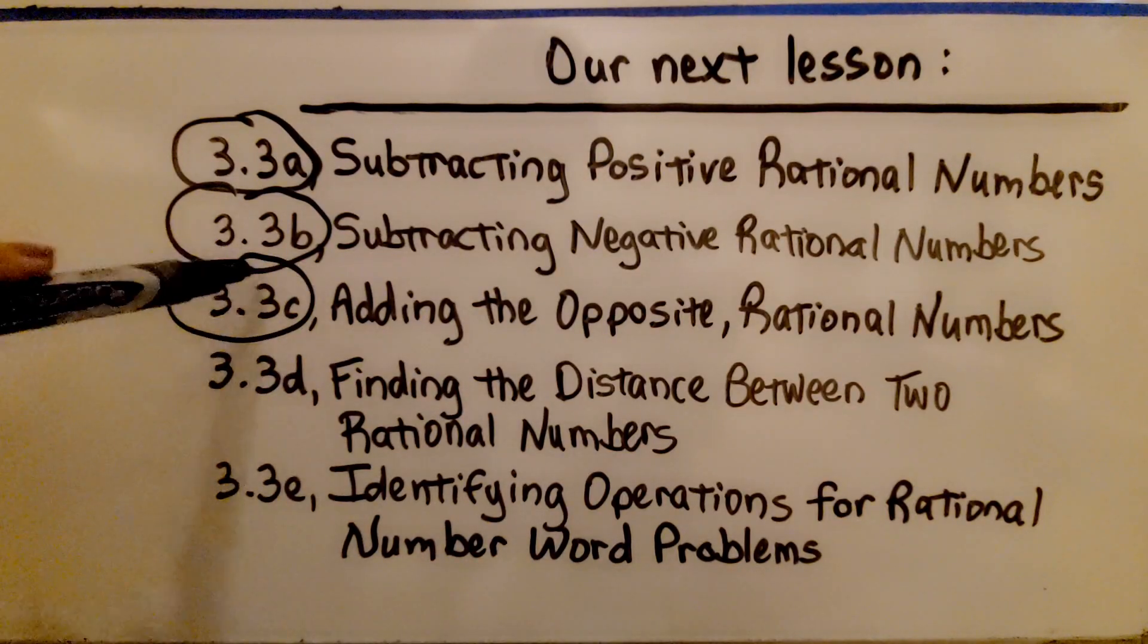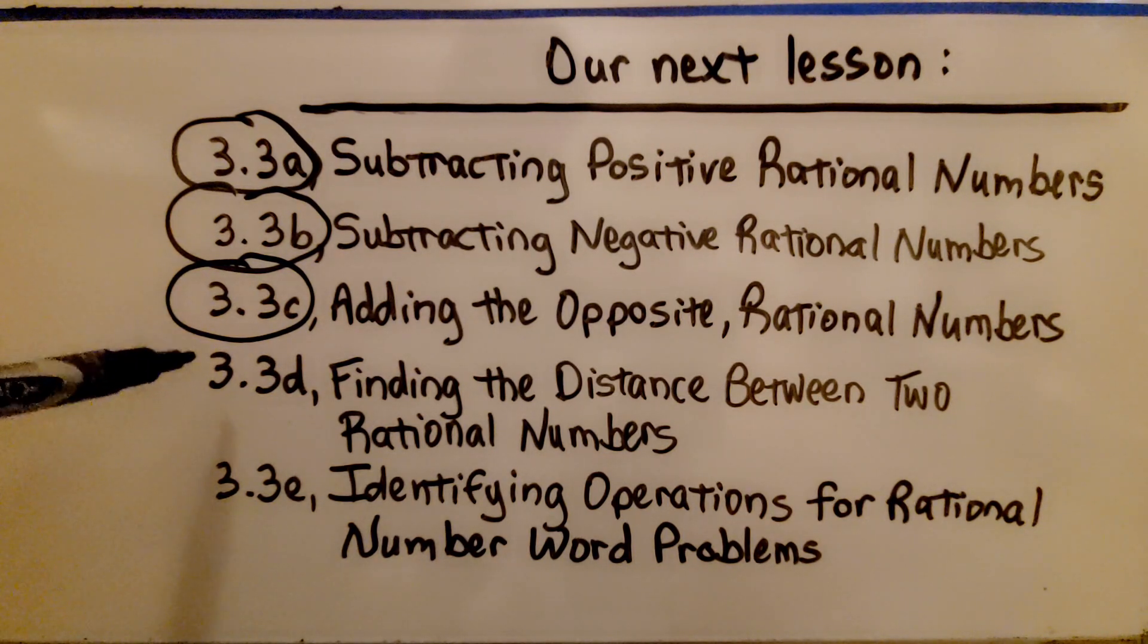We're finished with part c. We're going to move on to part d, finding the distance between two rational numbers.